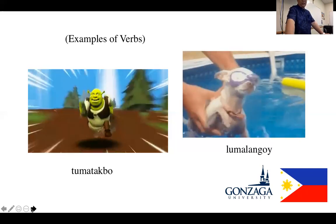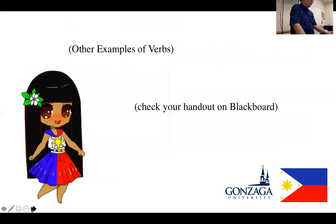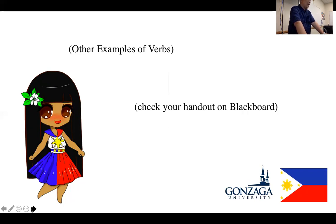Now I want you to go to your handout. Let's try to go over some of the verbs there. This is 16 pages — imagine if I asked you to supply all the roots for all the verbs here. That's impossible. So I'm just going to mention some of the commonly used verbs. For example: 'akyat' means 'climb.' And then 'alis' — alis means to leave or to depart. When you tell a person 'alis ka,' that means leave.